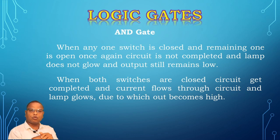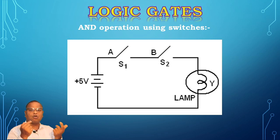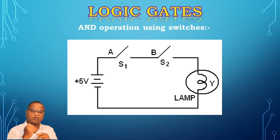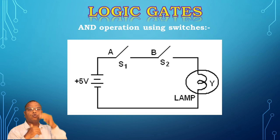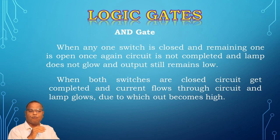Now, when both switches are in the closed condition — both are on — the circuit is now completed. Current flows through the switches and through the lamp. When both inputs are high (1-1), the lamp will glow, and when the lamp glows, the output goes to high level. A is 1, B is 1, lamp glows, and output is 1.